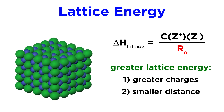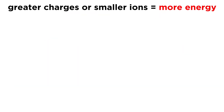If we have smaller ions and a smaller interionic distance, that value in the denominator gets smaller, and as a result the whole fraction becomes larger. So the two ways to get a greater lattice energy are greater charges and a smaller interionic distance, or smaller ions. To remind ourselves: greater charges or smaller ions equals more lattice energy.